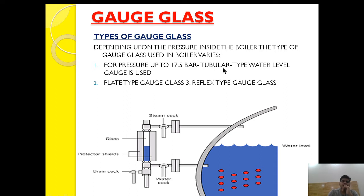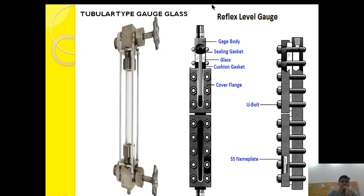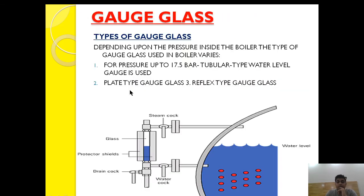The tubular type gauge glass is very simple in construction. As you can see, this is the steam cock and this is the water cock, and both cocks are held by a tubular type gauge glass having a tube type structure which is mounted here. The design is very simple and hence it can be used up to a pressure of 17.5 bar. But for a higher pressure range we have to modify the design.